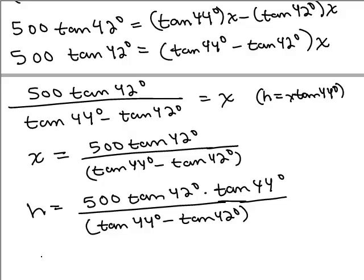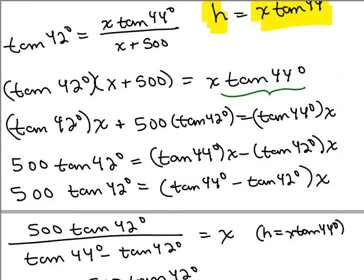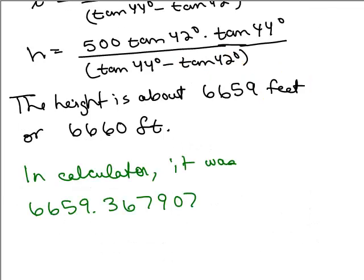So now we know what H is, and the height is about, in my calculator I've got 6659.36, so I'm going to say it's about 659 feet or approximately 6660 feet. You know we're approximating here. This is what I got in the calculator, 6659.367907, so rounded it really is 6659.